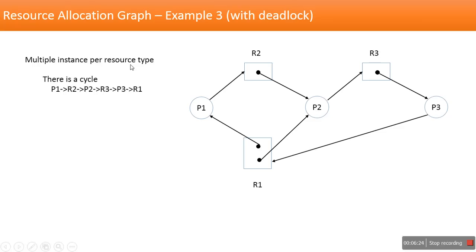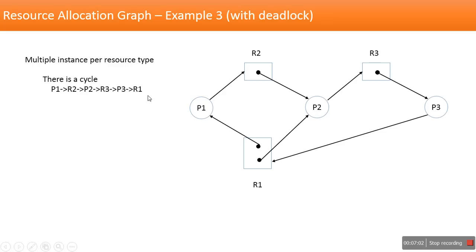Now we move to another type: multiple instances per resource type. For resource R1 we have two instances — one allocated to P1 and another to P2. In this scenario there is a cycle: R1 → P1 → R2 → P2 → R3 → P3 → R1. We need to determine whether this cycle implies a deadlock.